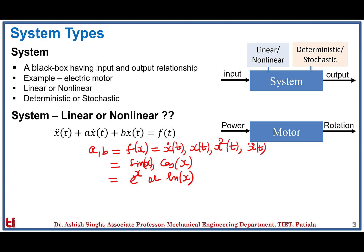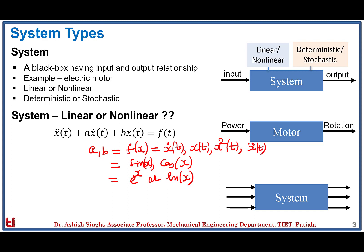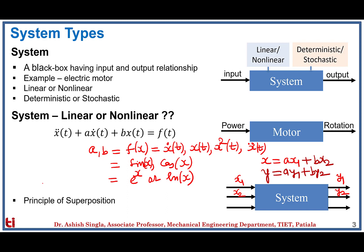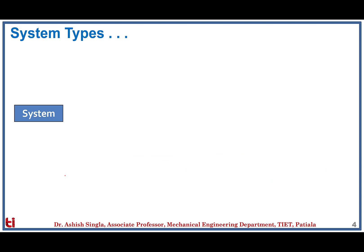If your mentor asks you to identify whether a system is linear or nonlinear without knowing about the system at all, you can use a simple method: give input x1 resulting in output y1, then give input x2 resulting in output y2. Then give a third input which is a linear combination of the previous two, like ax1 + bx2. If the corresponding output is also ay1 + by2, then the system is called linear. This principle is called the principle of superposition, which holds good only for linear systems.